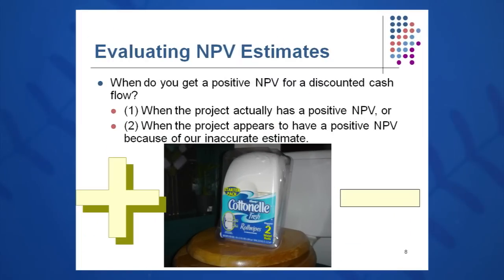So, when do you get a positive NPV for discounted cash flow? Well, A, when it actually is a positive NPV, or B, when it appears to have positive NPV because of our inaccurate estimates.